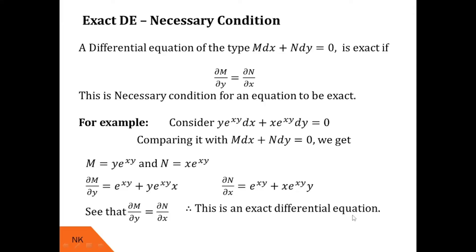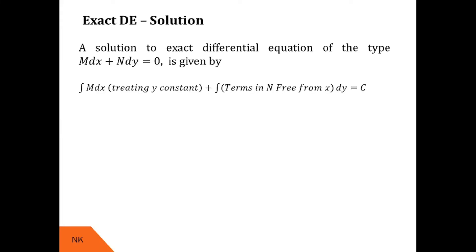Now let us talk about the solution to exact differential equations. For M dx + N dy = 0, if it is exact, the solution is given by: ∫M dx (treating y as constant) + ∫(terms in N free from x) dy = c, where c is the integration constant. We take M as the integrand in the first term and terms in N free from x as the integrand in the second term.